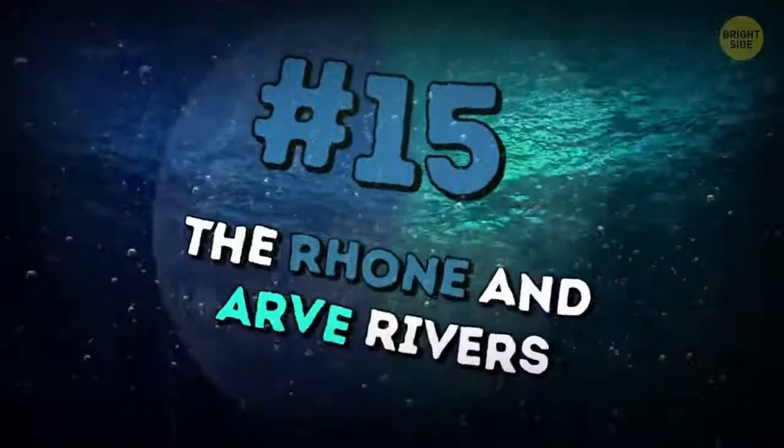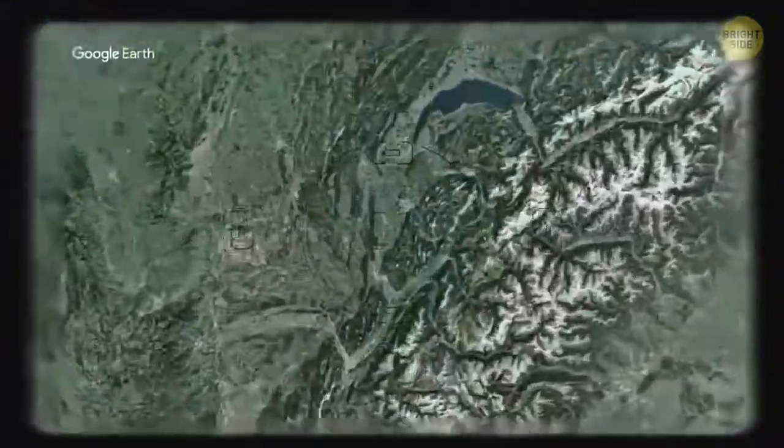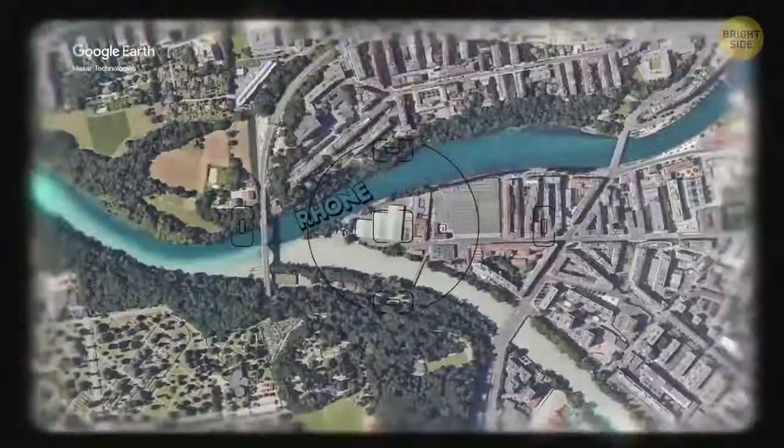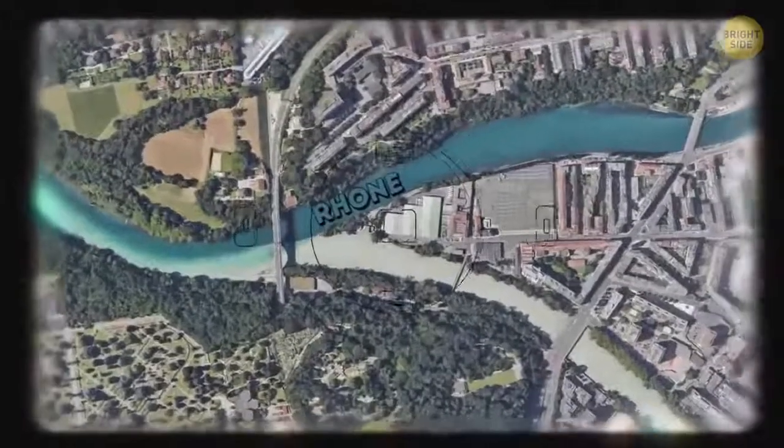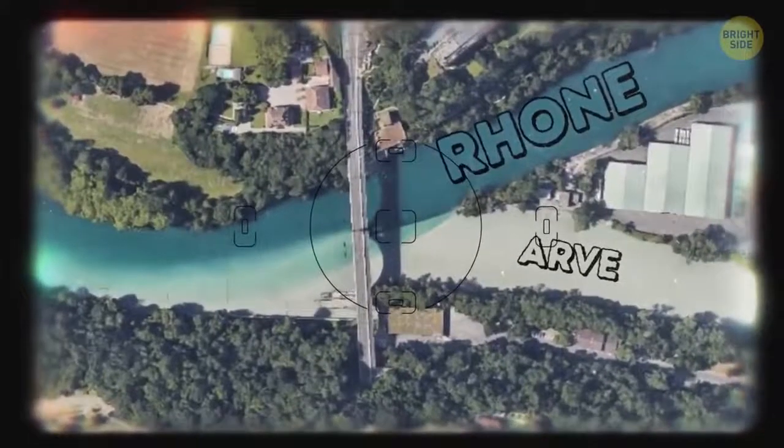15. The Rhône and Arve rivers. They flow into each other in Geneva, Switzerland. The Rhône is a pure river that flows out of the lake of Geneva. The Arve is cloudy as it gets its water from the glaciers of the Chamonix Valley.